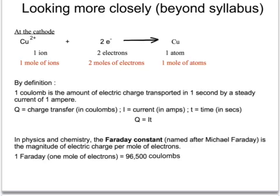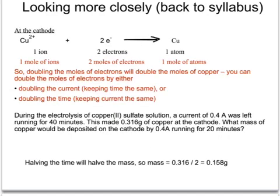Because the mass of copper deposited depends upon the number of electrons which flow, if we double the number of electrons we double the number of atoms of copper. So by doubling the flow of electrons — in other words the number of coulombs — we can double the mass of copper produced. We can double that number of moles of electrons by either doubling the current or doubling the time. Returning to the syllabus: doubling the number of moles of electrons will double the number of moles of copper, and you can double the number of moles of electrons by either doubling the current or doubling the time.